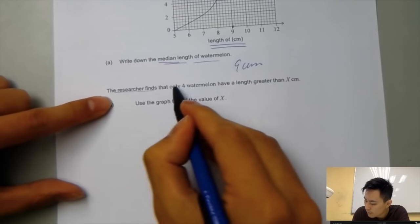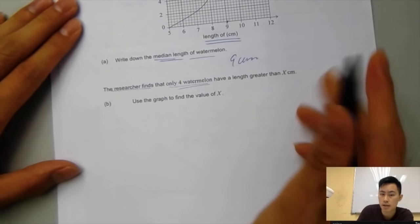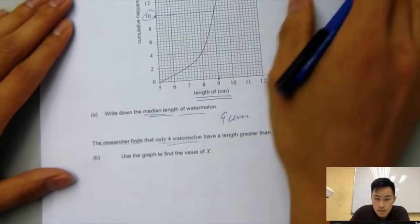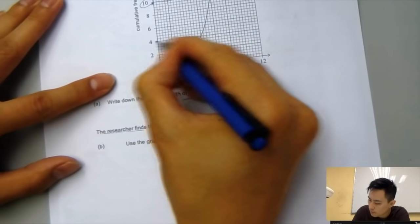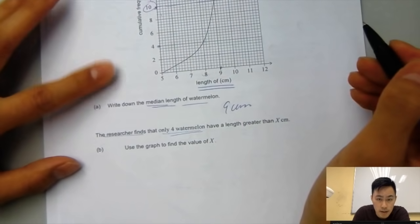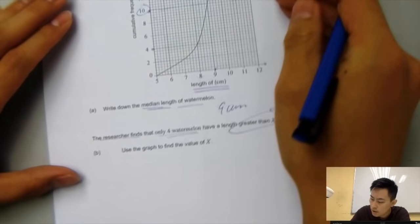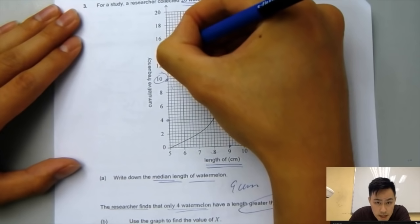The researcher finds that only 4 watermelons have a length greater than x cm. So 4 watermelons greater than x cm, what does that mean? Common mistake is you draw a line from 4, and they would just write 8. But that's all wrong, because it's greater than x, so you have to figure out the unit, 4 units from top down.